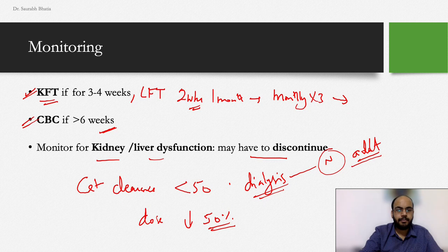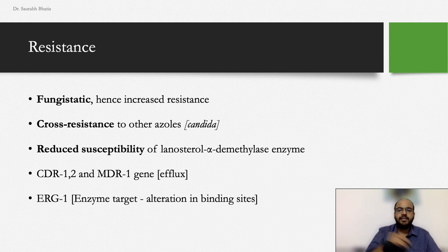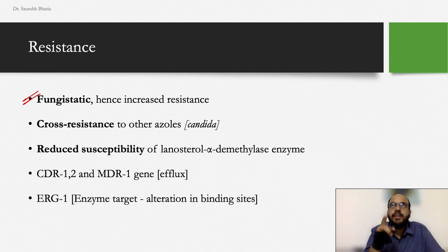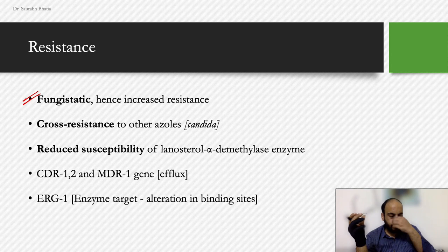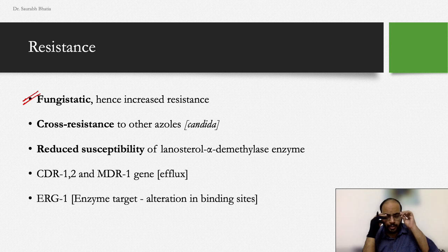Regarding the mechanism of resistance: fluconazole is fungistatic in nature, and this increases the chances of resistance development. Unlike fungicidal drugs that kill the fungus, fungistatic drugs only slow growth, giving the organism time to develop counteracting mechanisms. Therefore, fungistatic drugs are very prone to resistance.